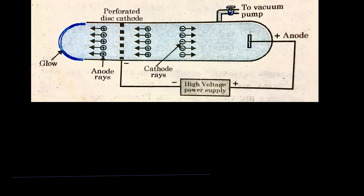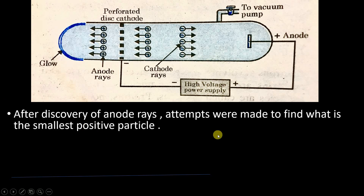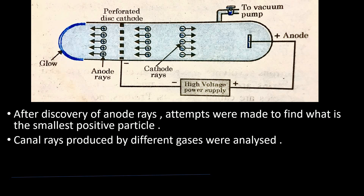After knowing what anode rays are, scientists wanted to know what these anode rays are actually made up of. Just as cathode rays are made up of electrons, scientists wanted to find the smallest particle present in the anode rays. Attempts were made to find the smallest positive particle. Anode rays produced by different gases were analyzed, and multiple gases were taken and studied.